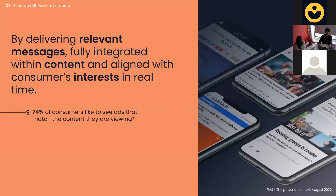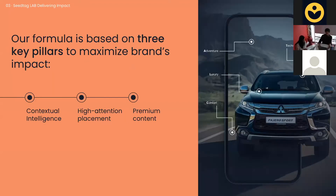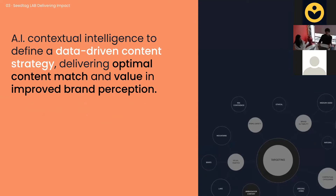Going back to the question — how can brands connect with consumers in an effective and respectful way? Looking at those examples, our answer is: by delivering relevant messages that are fully integrated within content and aligned with consumer interest in real time. Our formula is based on three key pillars to maximize brand impact: leveraging contextual intelligence, creating high-attention placements, and delivering those placements into premium brand-safe content. We use AI contextual intelligence to define a data-driven content strategy, delivering optimal content match and improved brand perception — because driving resonance is key to making your brand perform.